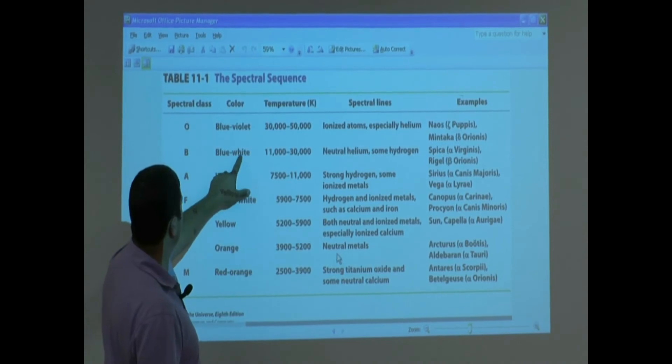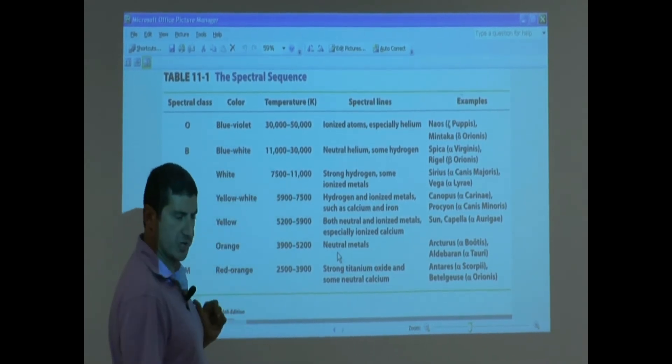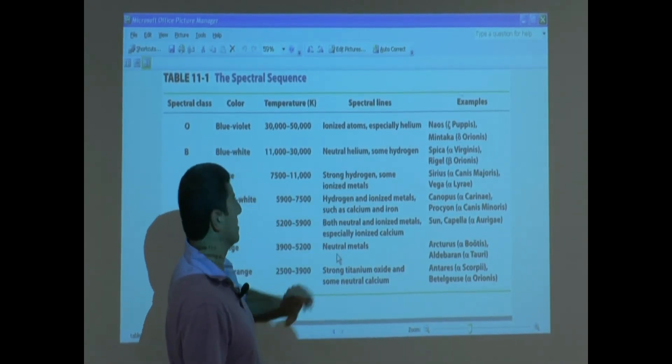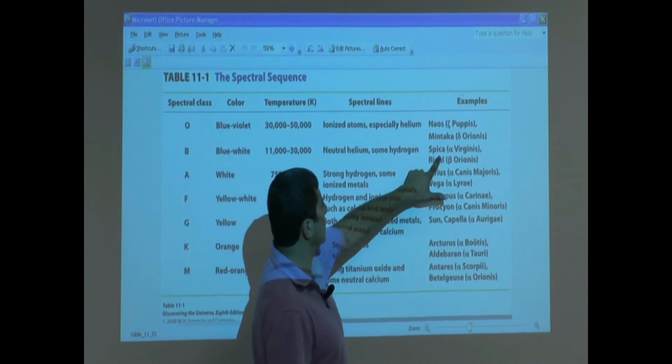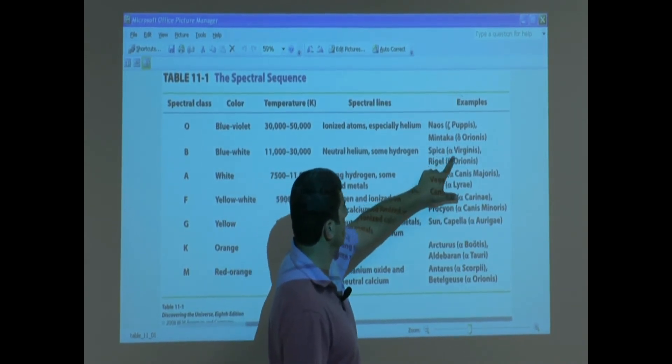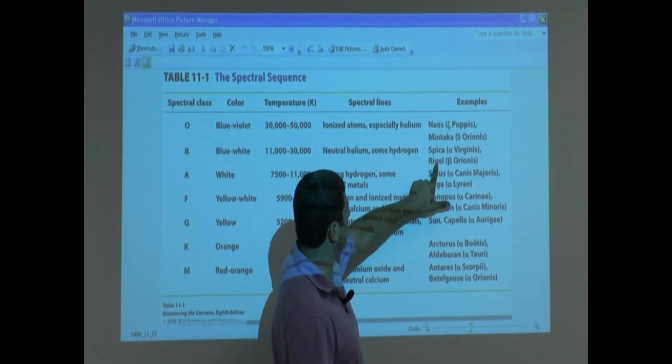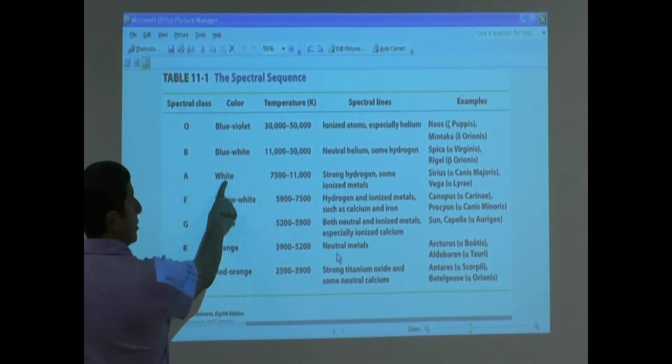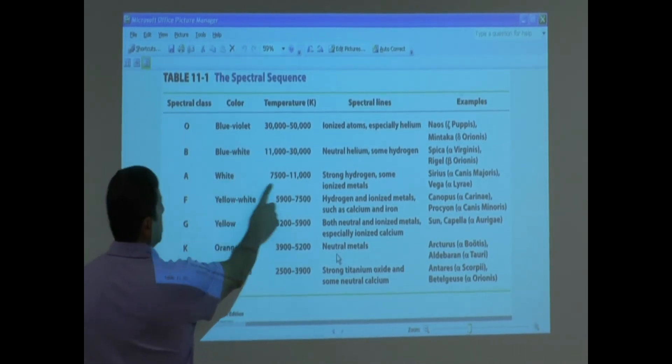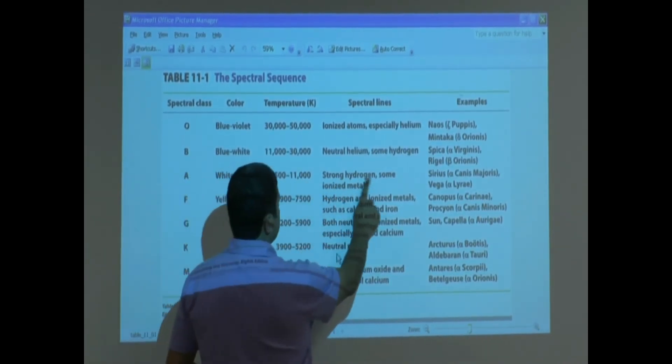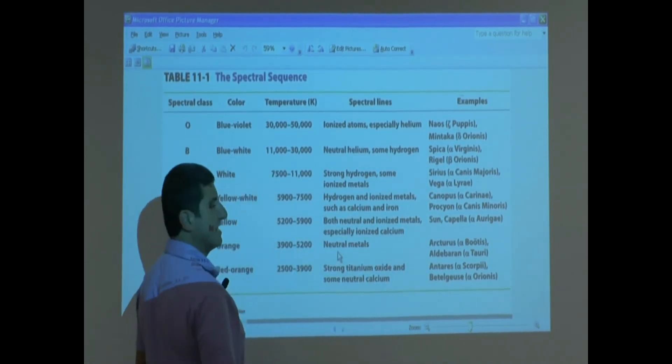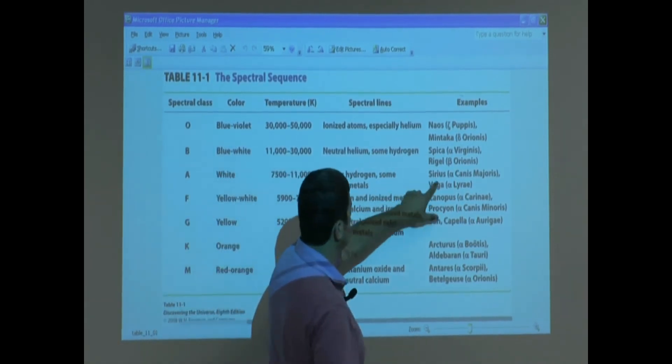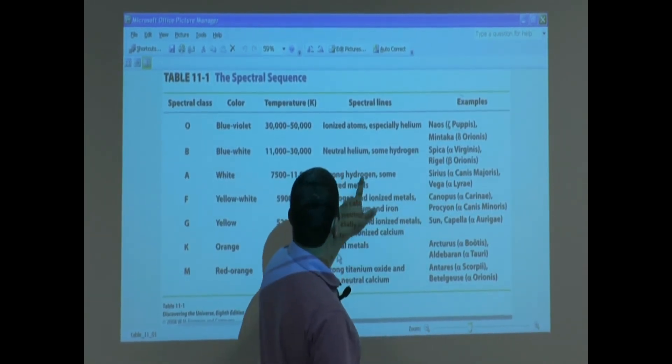B, they look blue-white, 11,000 to 30,000 Kelvin. They have neutral helium lines. They have some hydrogen absorption lines. Example of them: Spica, the brightest star in the constellation Virgo, and Rigel, second brightest star in Orion. A, they look white, 7,500 to 11,000. Strong hydrogen lines, some ionized metal lines. Sirius and Vega. You see that? Strong hydrogen.